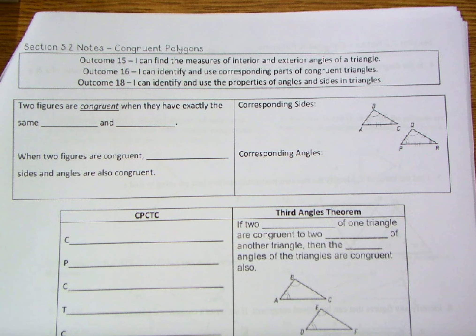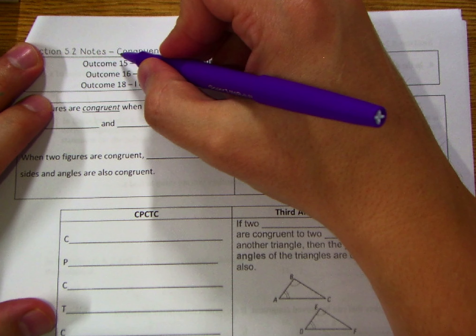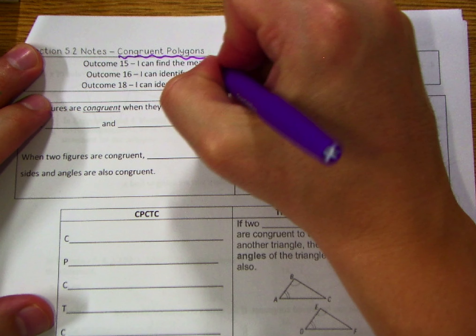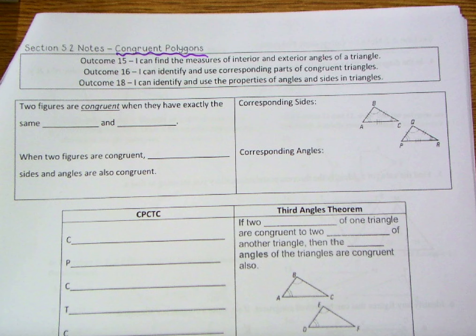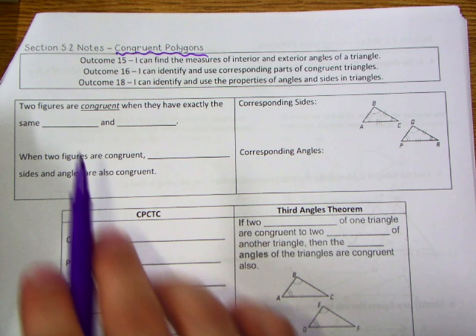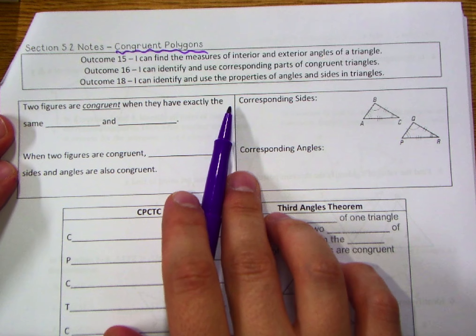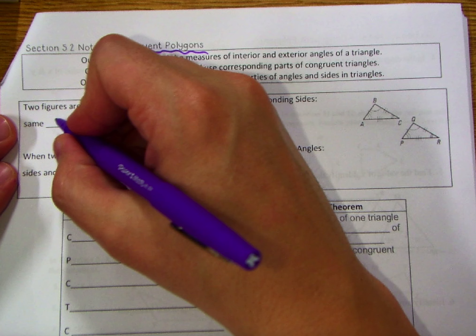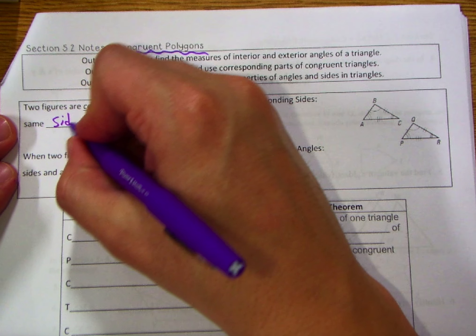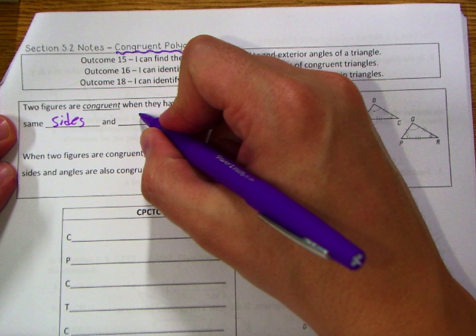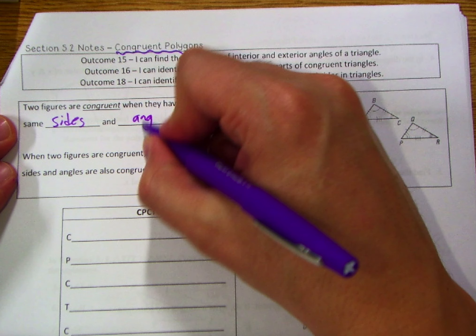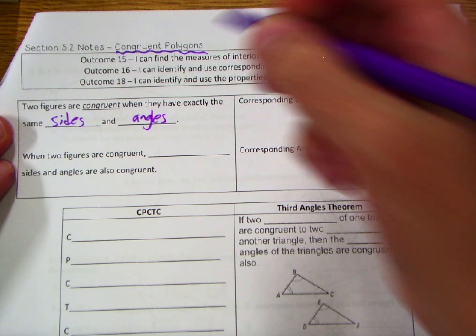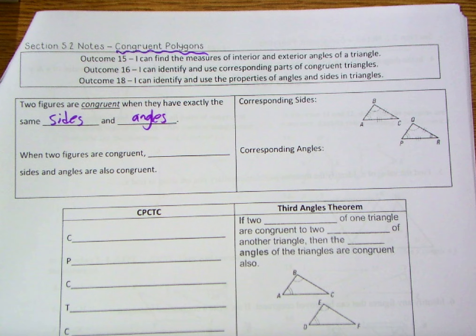Welcome to section 5.2, where today we're going to be taking a look at congruent polygons. Here's your brief overview: basically, two figures are congruent when they have exactly the same sides and angles. That's really what you're looking for.